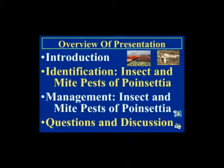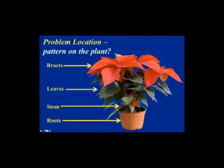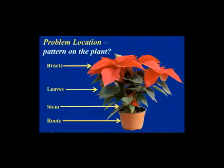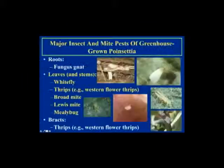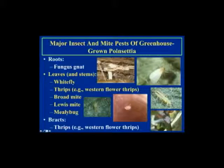After each insect and mite pest, we'll talk about the management strategies, and then finally we will cover some questions. We're going to be talking about insects and mite pests that attack the bracts, the leaves, the stem, and also the roots. The major pests of greenhouse-grown poinsettias include fungus gnats on the roots, and on leaves and stem: whitefly, thrips — in particular western flower thrips — broad mite, Lewis mite, mealybug, and on bracts, western flower thrips.